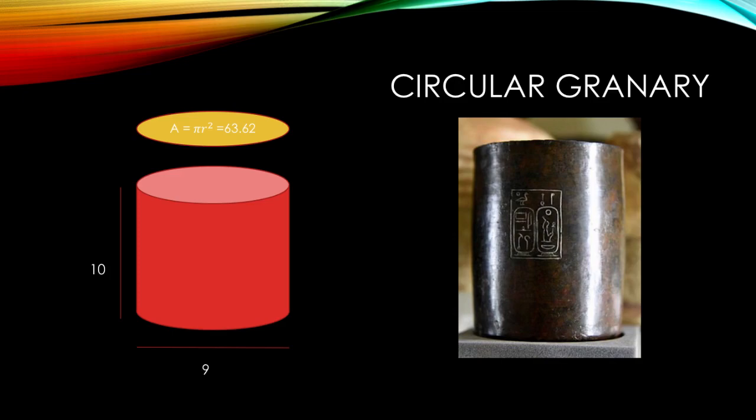In this instance the diameter of the circle on top is 9, which means that the radius is 4.5. So we use the equation pi times r squared. So r is 4.5. 4.5 squared is 20.25. You multiply it by pi and you get the result 63.62.